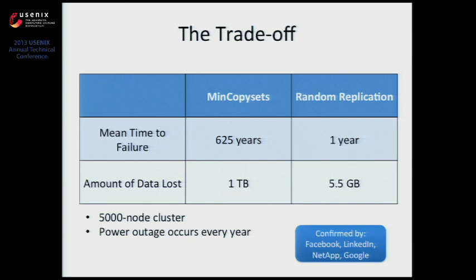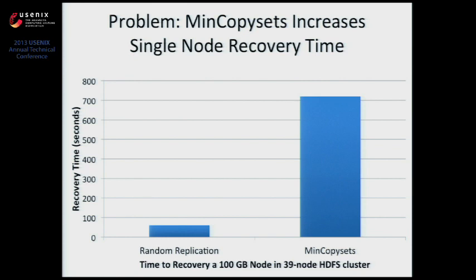The main problem with the min copy sets scheme is that it has a very bad effect on node recovery time. With random replication you spread data across the entire cluster, so if any node dies you can recover its data from basically all nodes simultaneously. We plotted the time to recover a 100-gig node in a 39-node HDFS cluster at Stanford, and random replication recovers much, much faster than min copy sets — because in min copy sets you only have two other nodes to recover from.